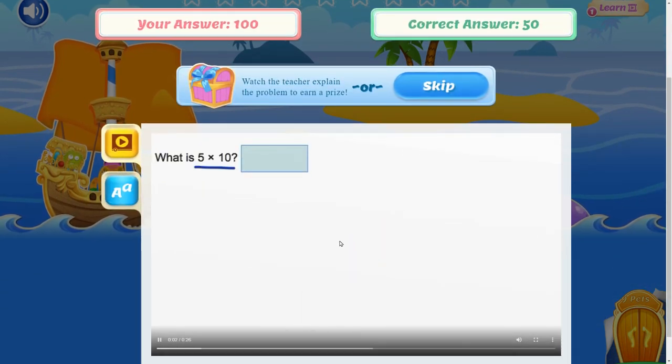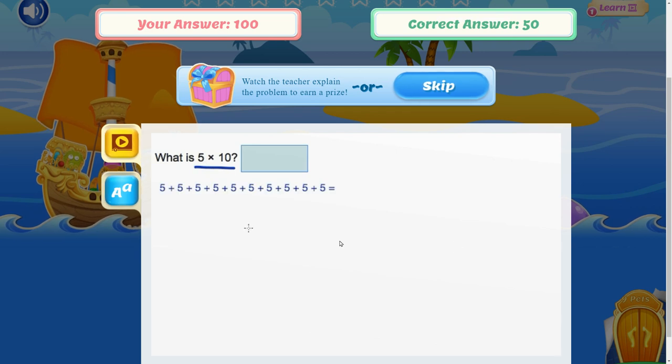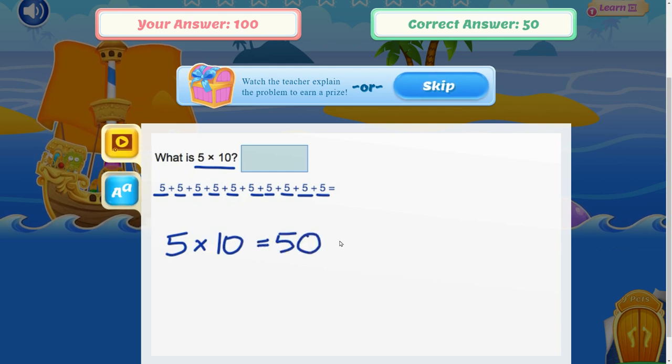Let's go ahead and draw 5 times 10 as a long addition problem. There we go. So we have 1, 2, 3, 4, 5, 6, 7, 8, 9, 10 fives. Instead we need to practice multiplying. So we have 5 times 10 equals 50.